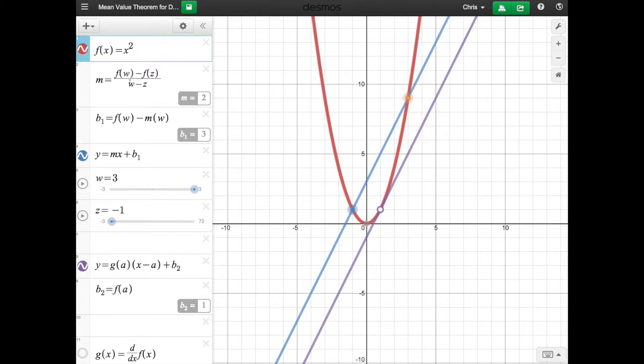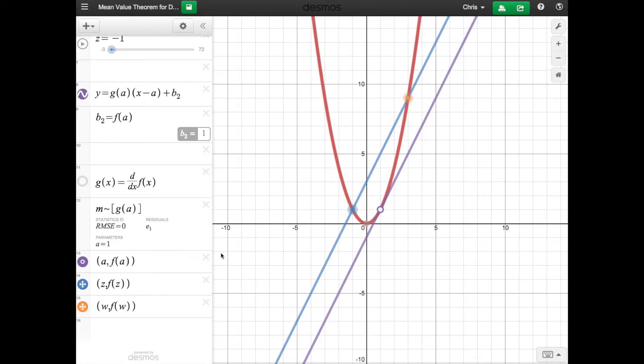This m right here finds the slope between the points w and z, so when x is w and when x is z. These two variables are represented right here with sliders. They're also color coded. I have it labeled down here, so w is going to be orange and z is going to be blue.